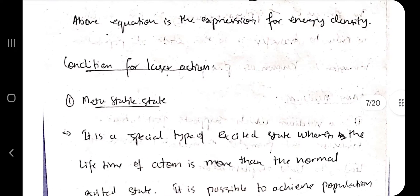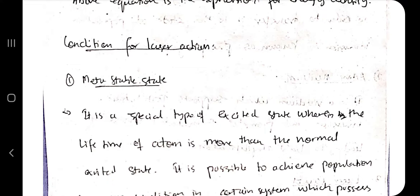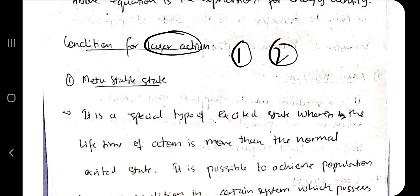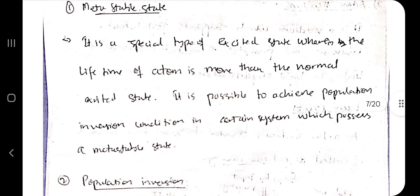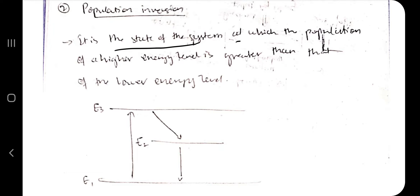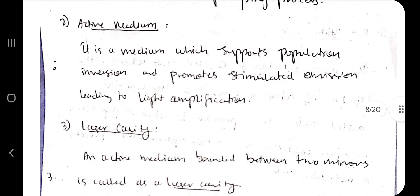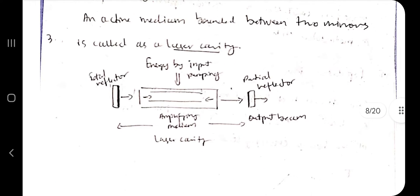Now the conditions for laser action: two conditions are required for both CO2 laser and gallium arsenide laser. First is the metastable state — a special excited state where the lifetime of the atom is longer than a normal excited state. Second is population inversion — a state where the population of a higher energy level is greater than the lower energy level. These are achieved through the pumping process, which supplies energy to the medium.